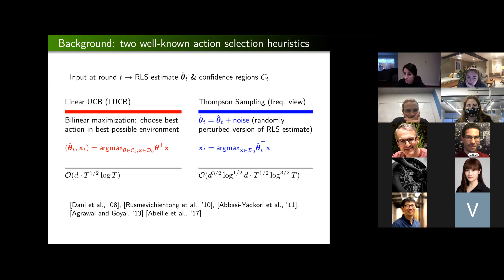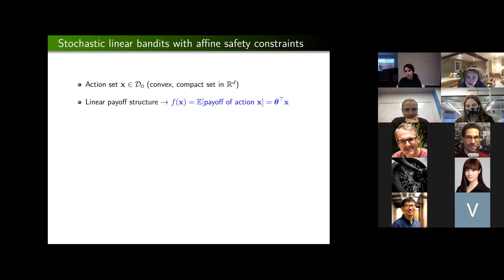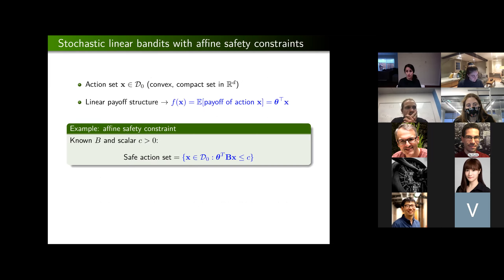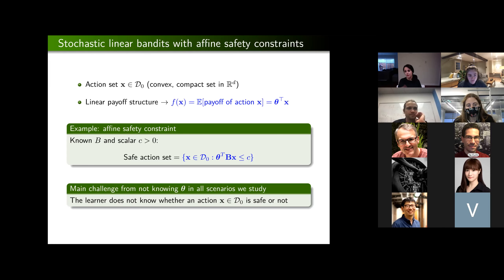The order of regret for UCB is O(√T log T) and for Thompson Sampling is O(√T log^(3/2) T). Now adding affine safety constraints while keeping the linear payoff structure: one example constraint is theta^T B x ≤ c at each round t. I know the rotation matrix B and scalar c but not theta. Every time I select action x, I want this constraint satisfied. The challenge is that if I don't know theta, I cannot determine if action x is safe.